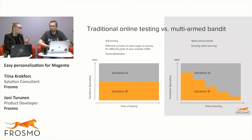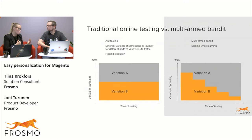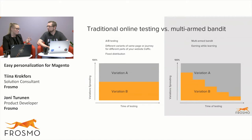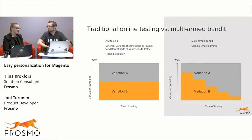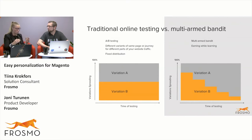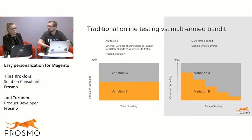With multi-arm bandit — an algorithm-based automated testing approach — you choose a reward for the algorithm and let it run. As you can see in the picture on the right, there's a differentiation in how much each variant is shown. For example, using the Epsilon Greedy algorithm, out of 100 shows, 90 times it shows the winning version and 10 times it tries to find a competitor to that winner. This way you're only showing the bad version 10 percent of the time and 90 percent of users see the better one.